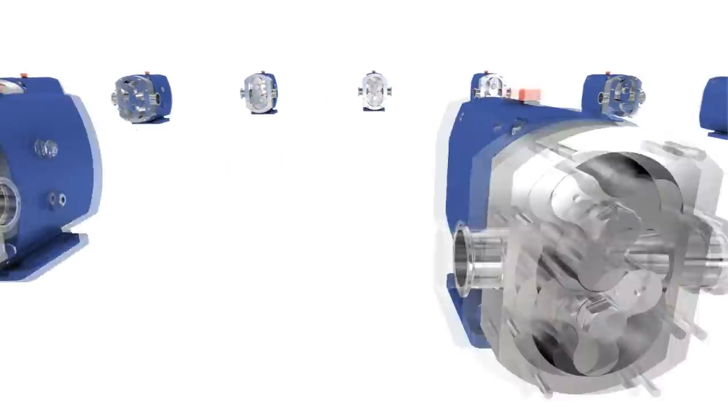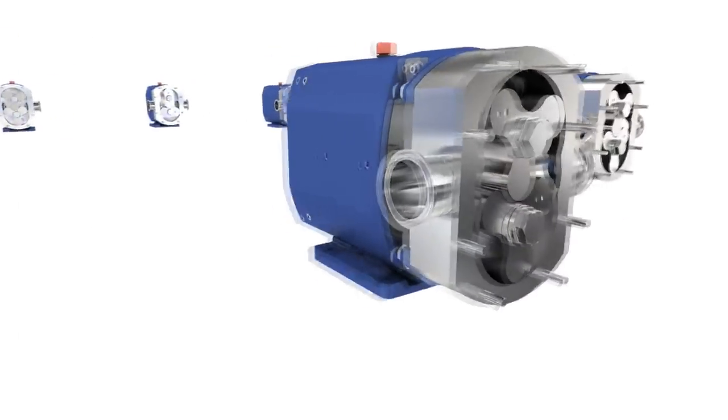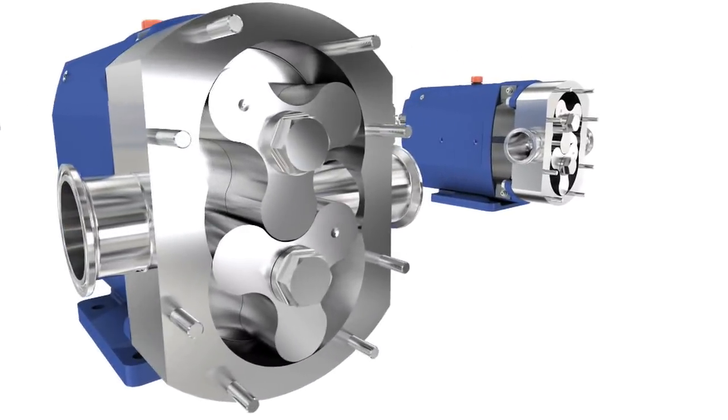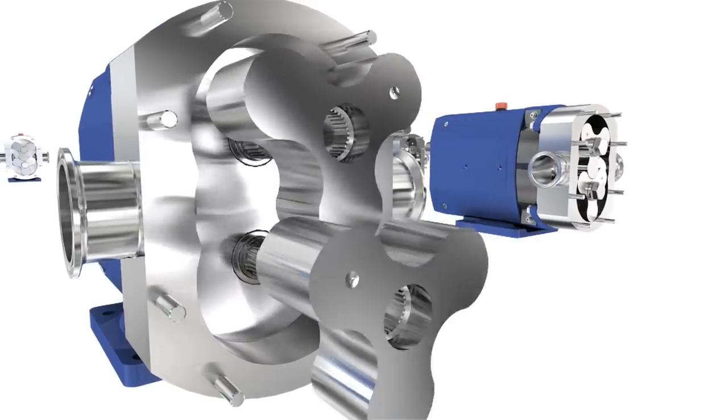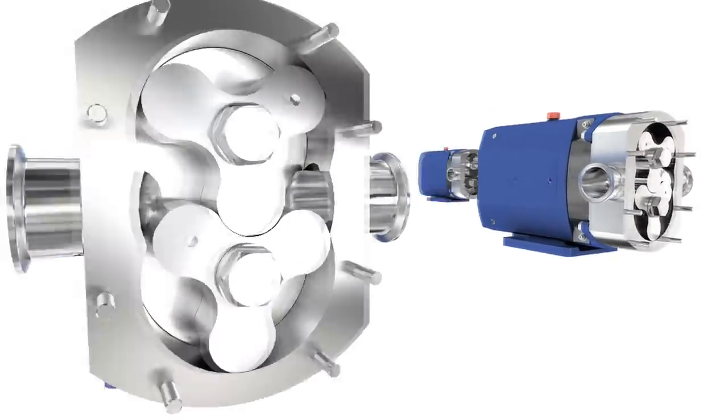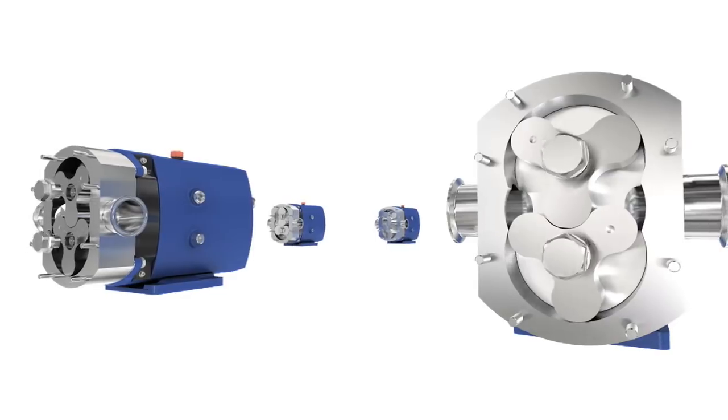Adding to its flexibility, the SRU features tri-lobe and bilobe rotors in 316L stainless steel. The tri-lobe is our standard option and provides gentle and efficient product handling, suitable for most applications.